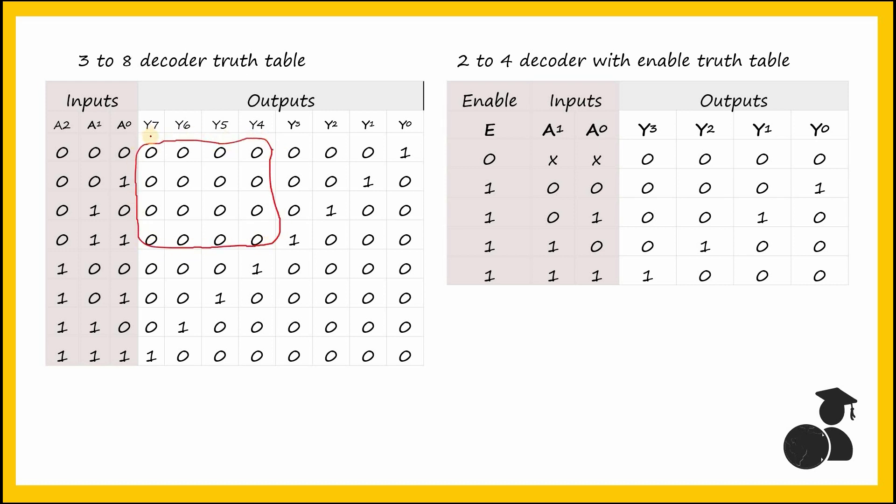Also notice that in the 3-to-8 decoder, for the first four iterations, Y4 to Y7 is always 0, and for the last four iterations Y0 to Y3 is always 0. So from this we can understand that at a time only one of these 2-to-4 decoders will be enabled. In this part, consider that this is represented by one of your 2-to-4 decoders and this portion is represented by your second decoder. So for these four iterations, decoder 1 is enabled while 2 is disabled, and for the last four operations, decoder 2 is enabled and 1 is disabled.